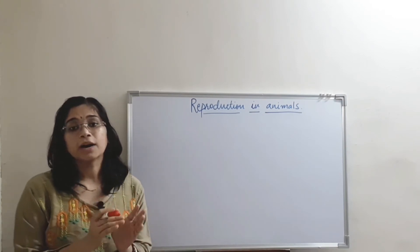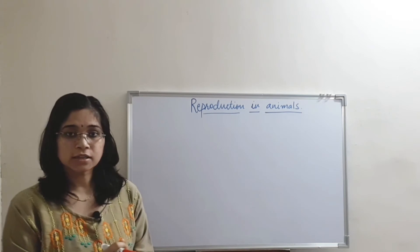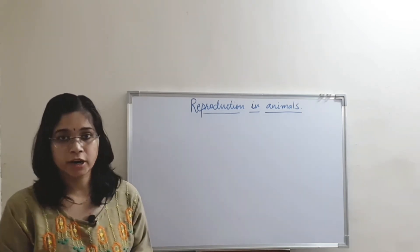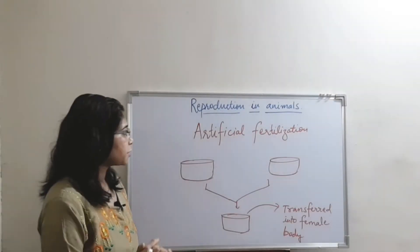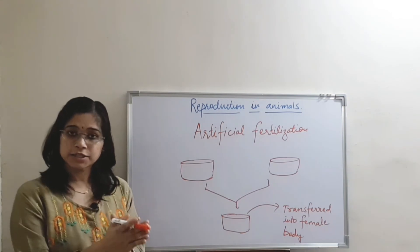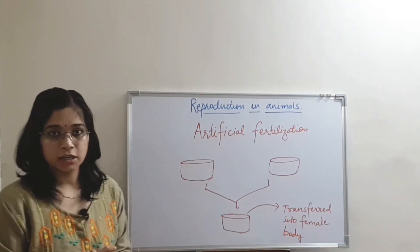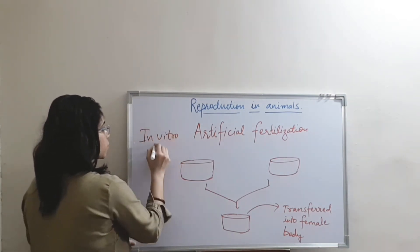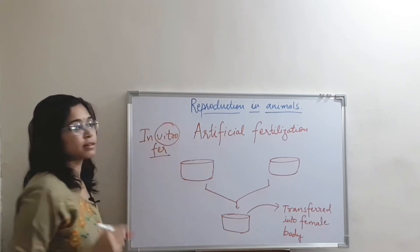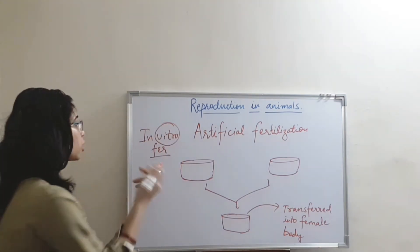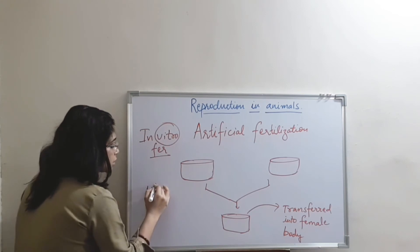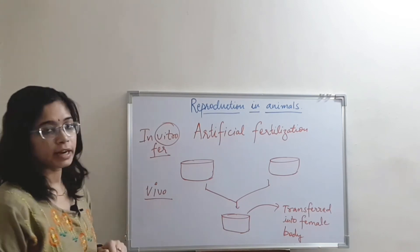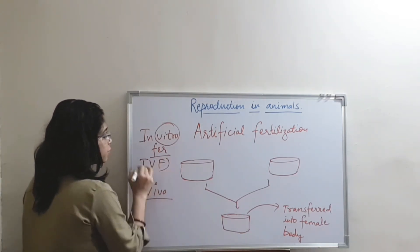Apart from natural, there is one more type of fertilization — artificial fertilization — in which fertilization takes place inside the laboratory, but not inside the body of an organism. It is also known as in vitro fertilization. Whenever anything is related to laboratory, we call it in vitro; when related to the body, we call it in vivo. This is in vitro fertilization, popularly known as IVF.